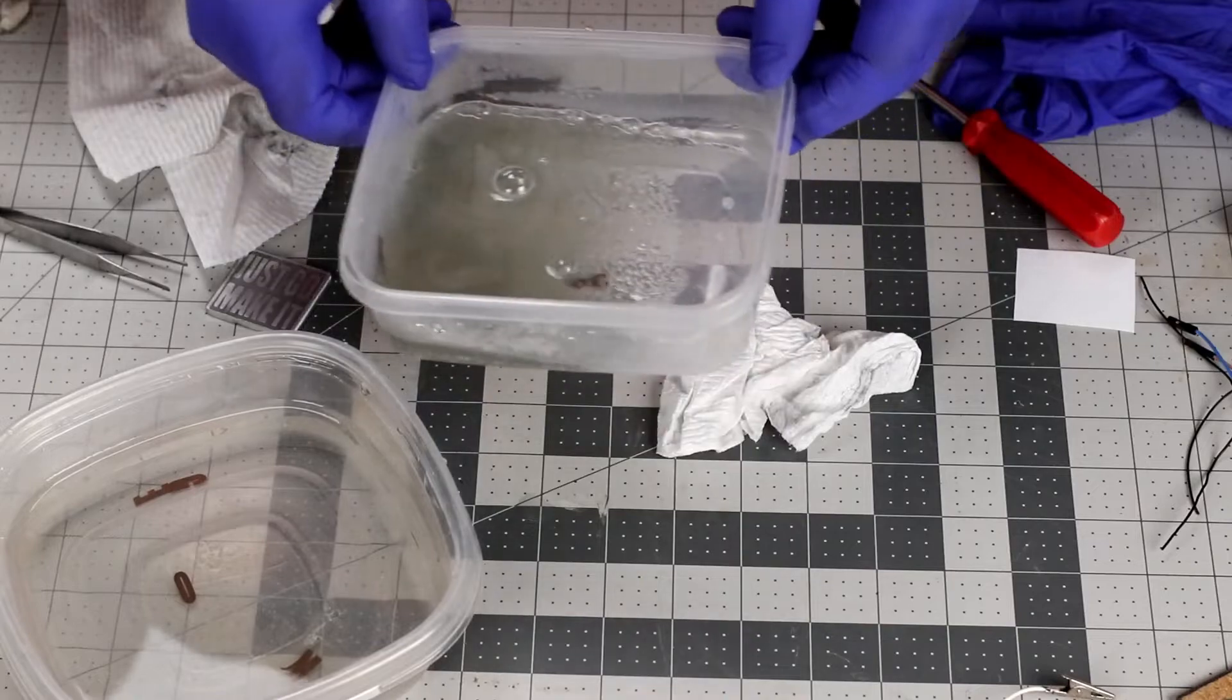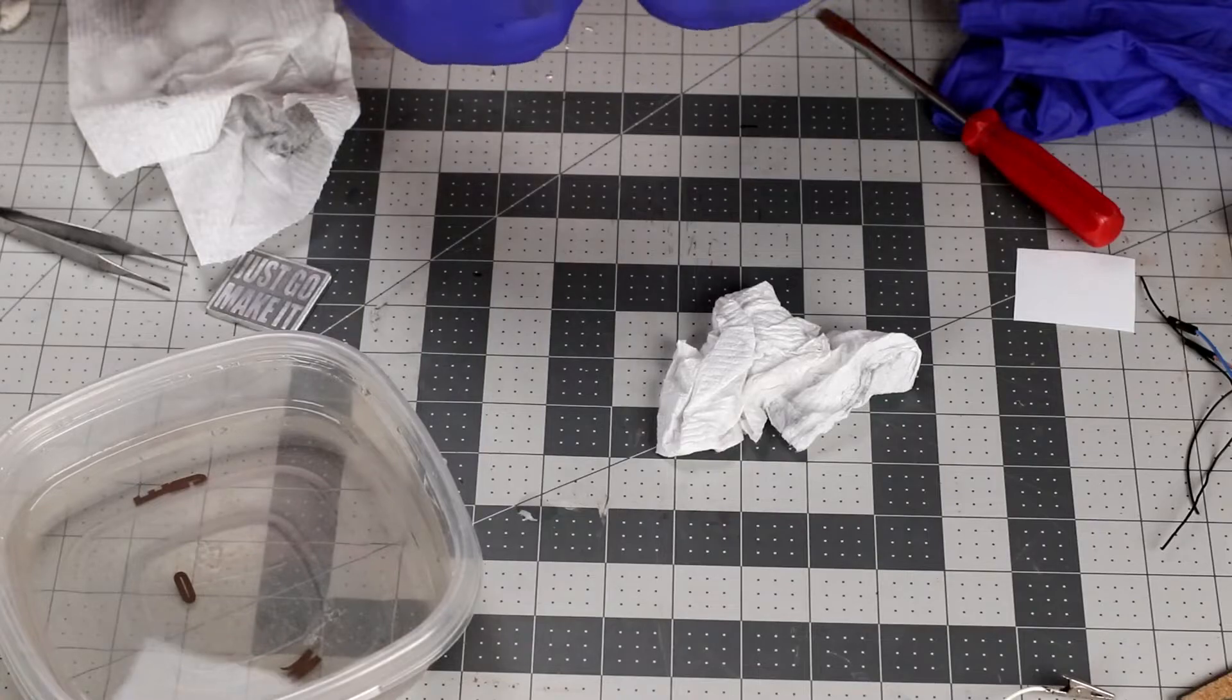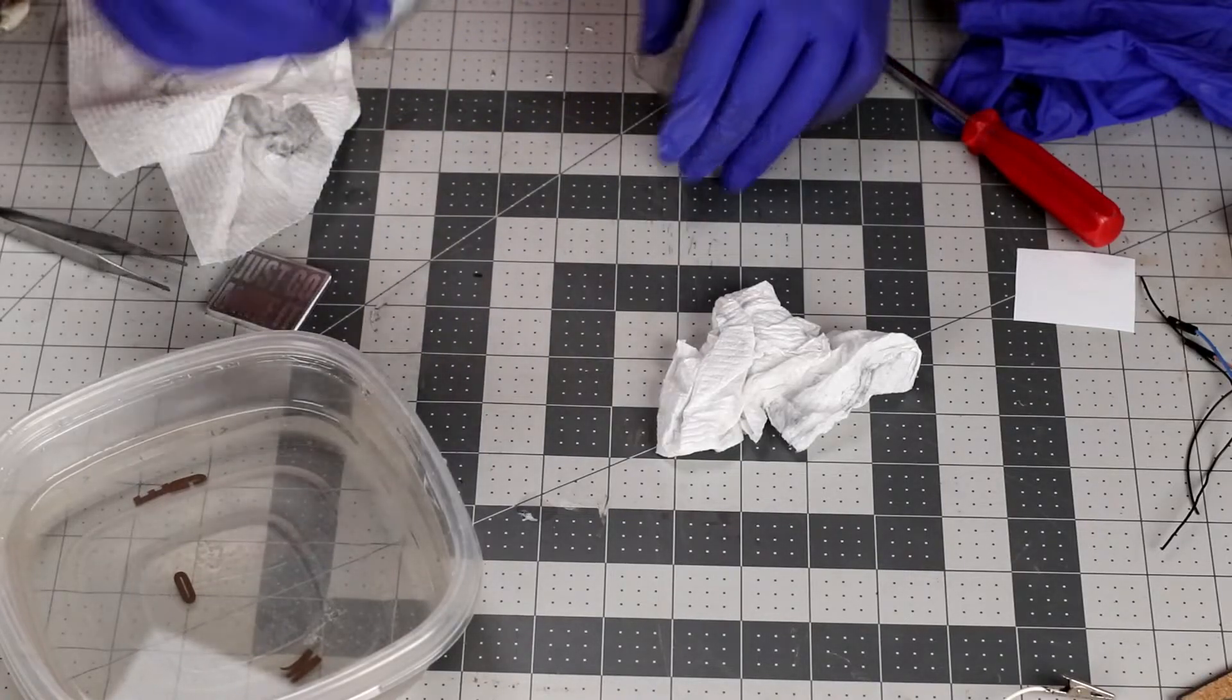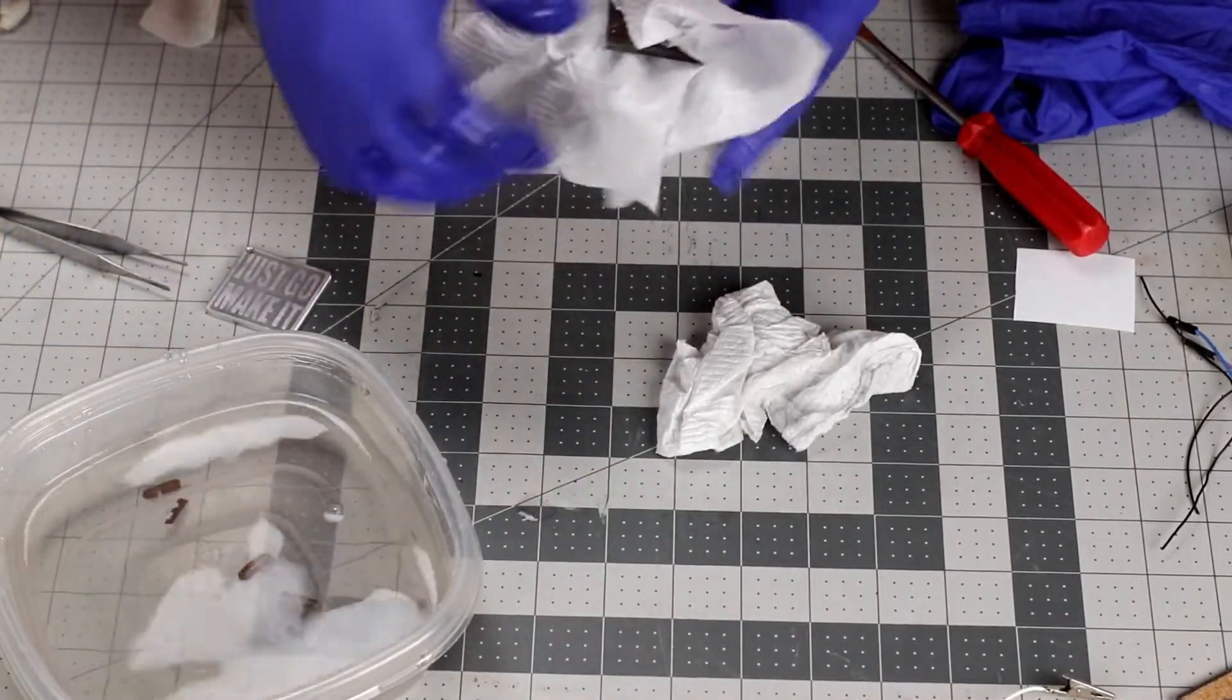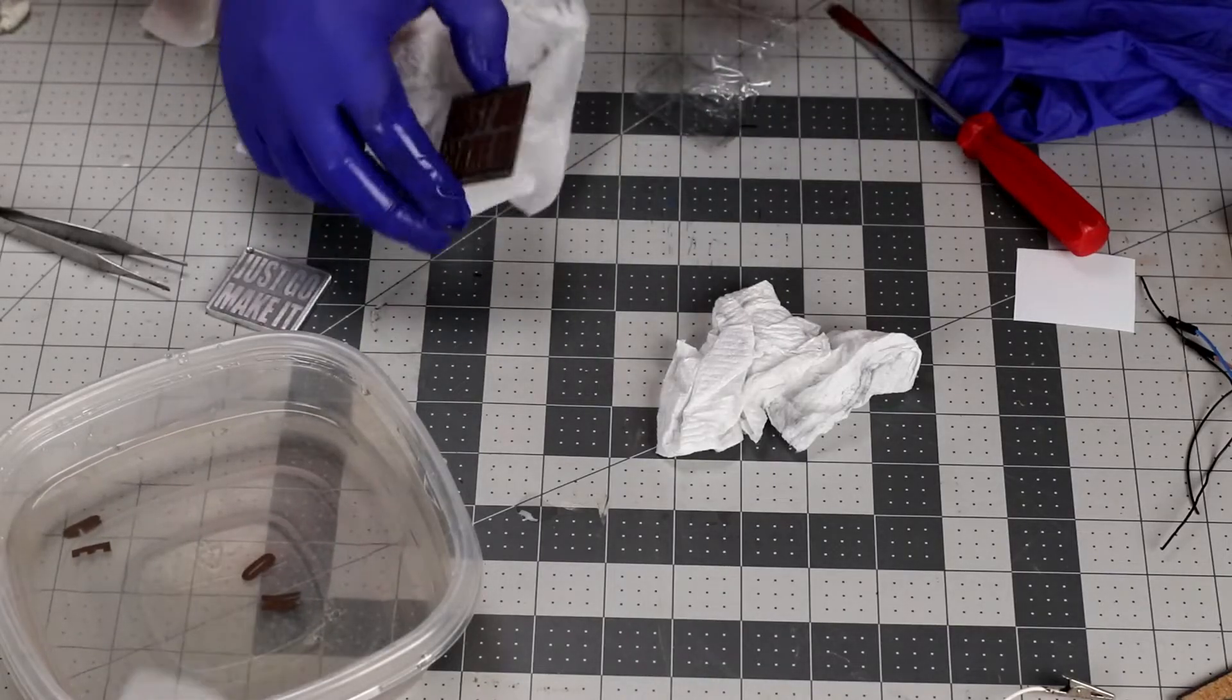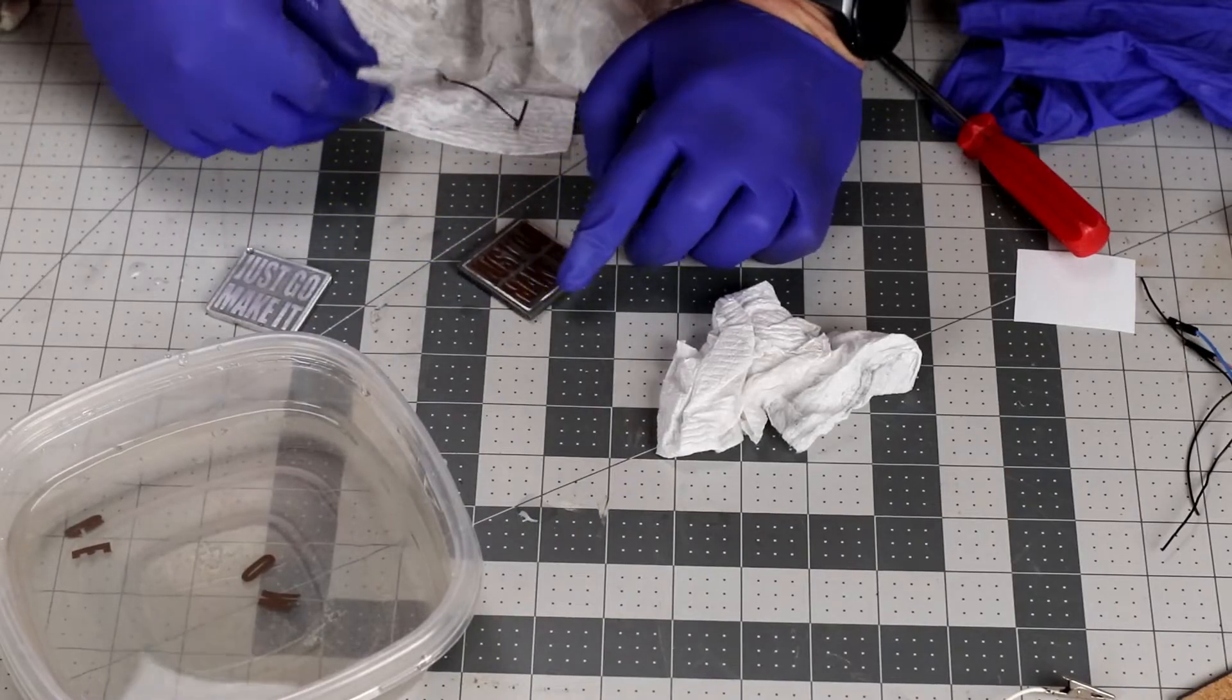So I'm going to take this, set it over to the side. I've rinsed this off real well in the water. I'll peel the tape off of it and give it another good rinse and wipe it down with a paper towel. Now let's peel this vinyl off and see what I've got.